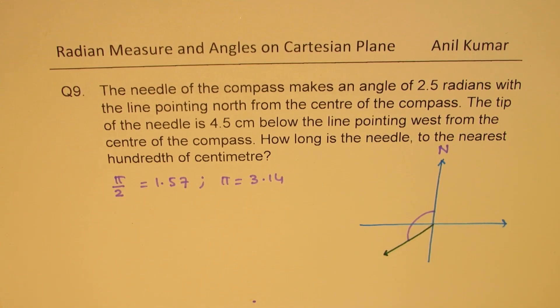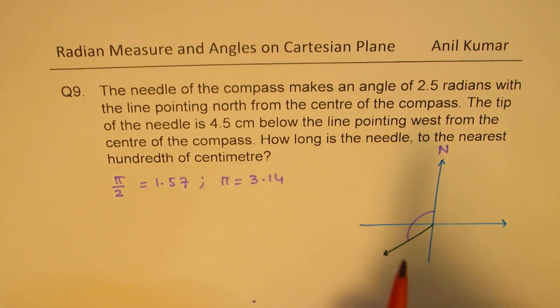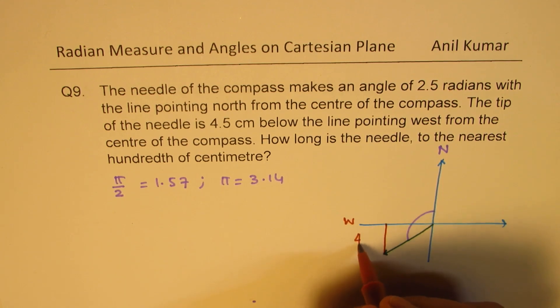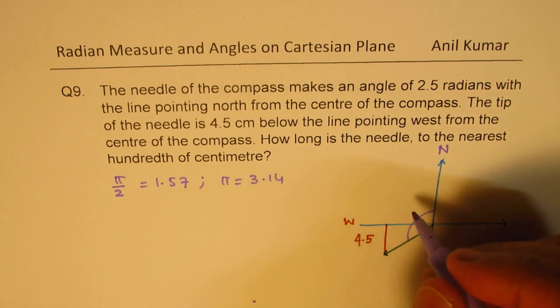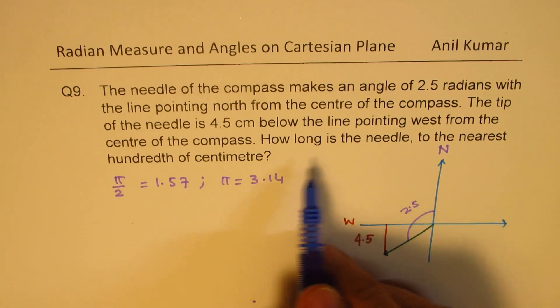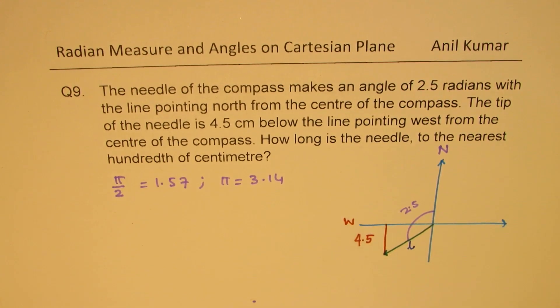Now, what the question is saying is that the tip of the needle is 4.5 centimeters below the line pointing west. So, that is west. Below this line, that tip is 4.5 centimeters. This angle was 2.5 radians. We need to now find the length of the needle. How long is the needle to the nearest hundredth of centimeters? So, this length is what we need to find.